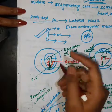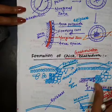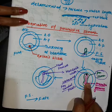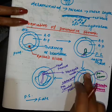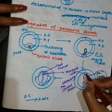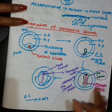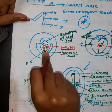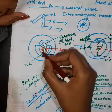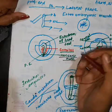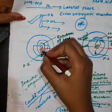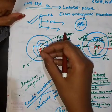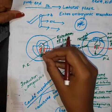Hansen's node moves toward the posterior side because the primitive streak elongation is pushing it posteriorly. This is a key point: Hansen's node is not actually moving on its own; rather, it is the elongation of the primitive streak that pushes Hansen's node toward the posterior side. The notochord is laid down in the head-to-tail direction, and the notochodermal cells move inward.